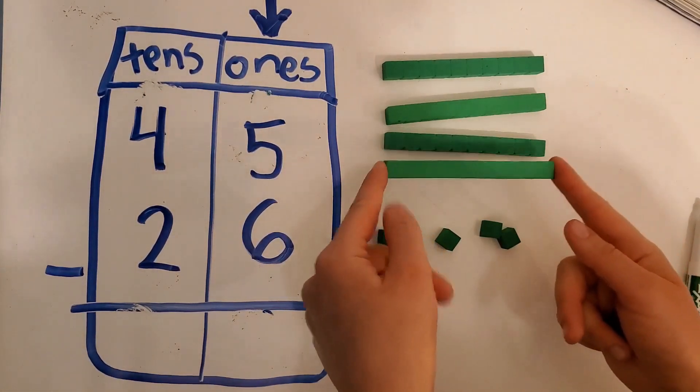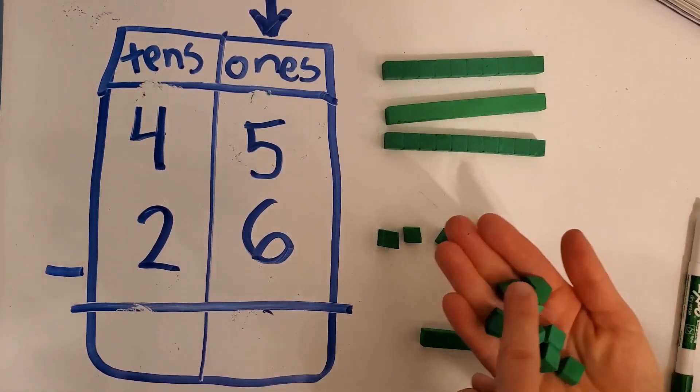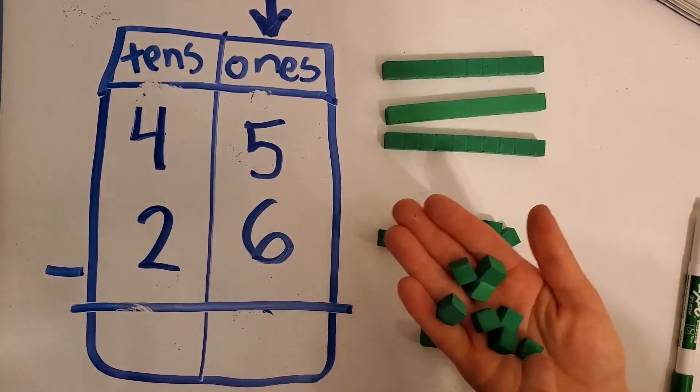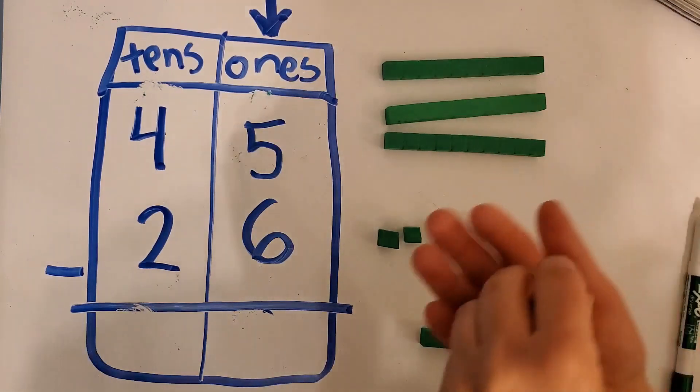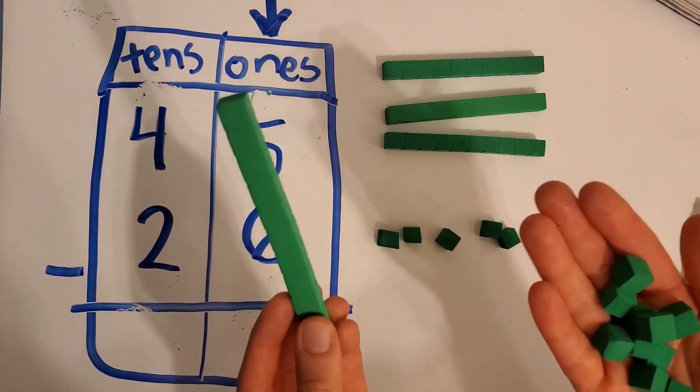So let's take one of these tens and then let's get ten ones. Let's see. We have one, two, three, four, five, six, seven, eight, nine, ten. Perfect. So now we're going to trade these. We're going to trade this one ten rod for these ten ones.